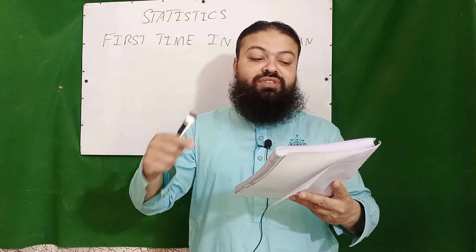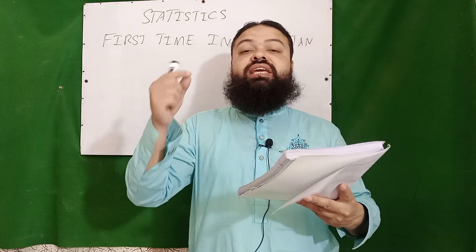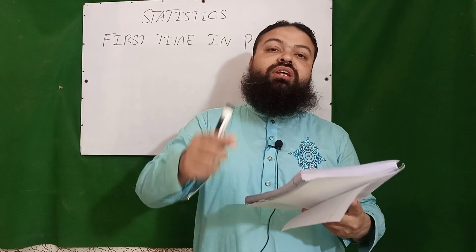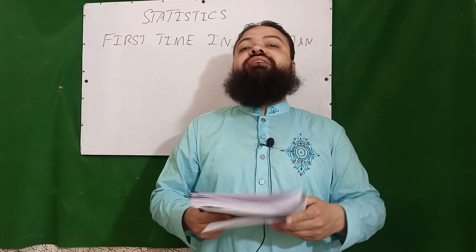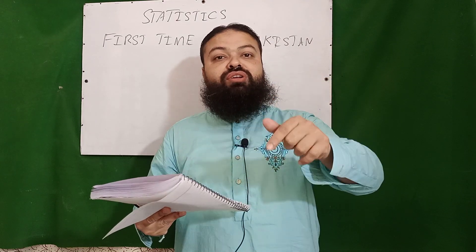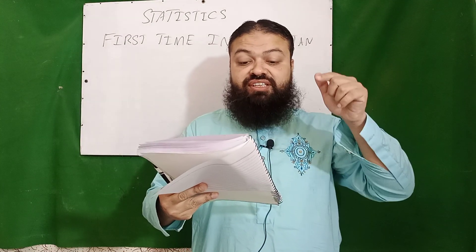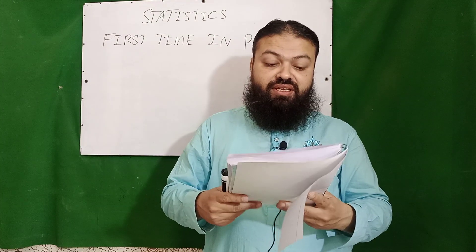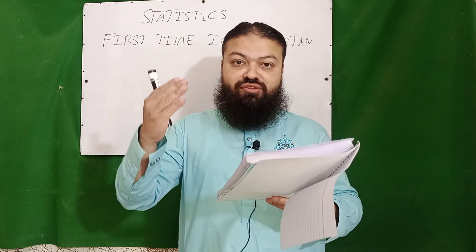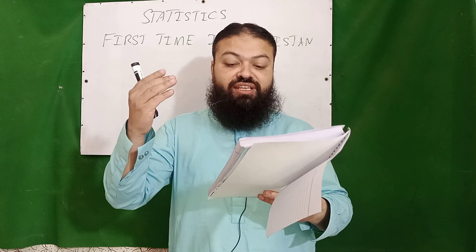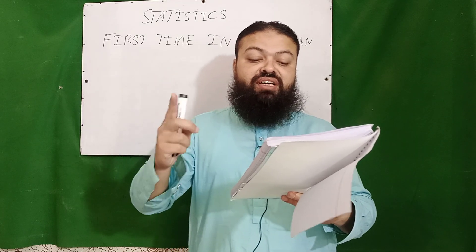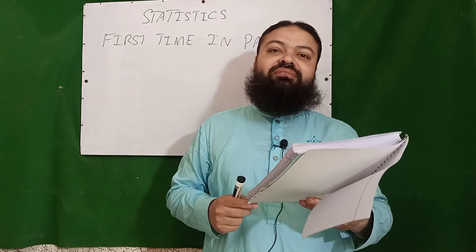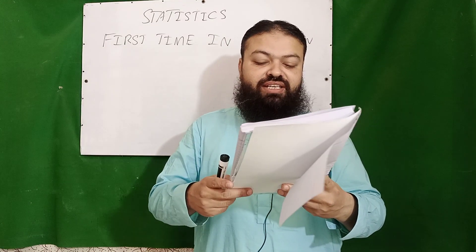F distribution was invented by G.W. Snedecor, who named it F in honor of the great British statistician R.A. Fisher. Next important question: ANOVA — Analysis of Variance — was introduced by Sir R.A. Fisher in 1923.